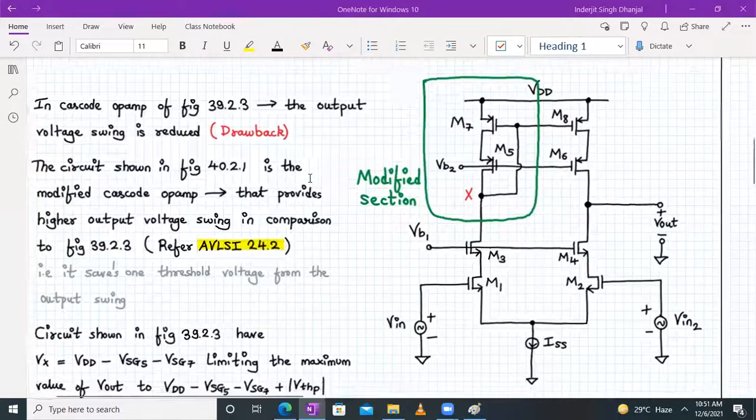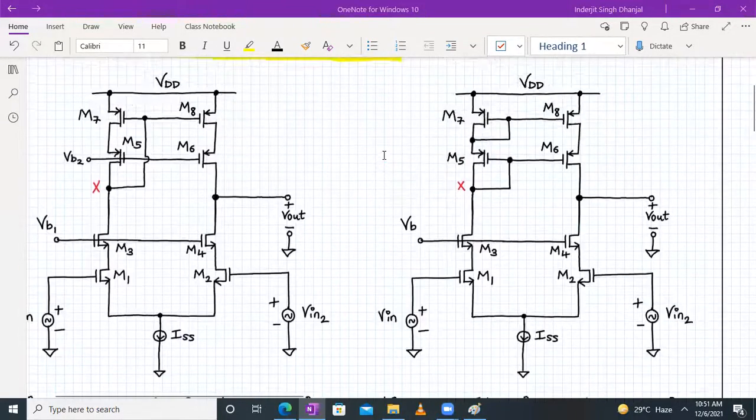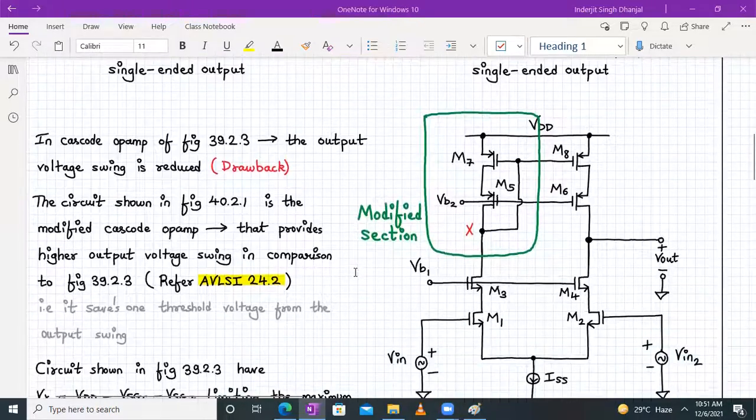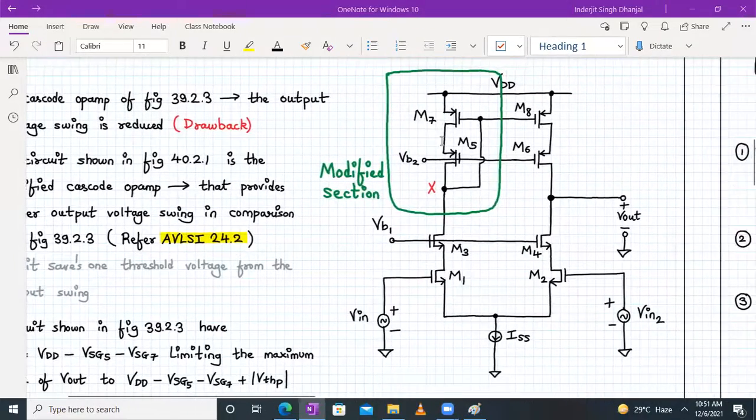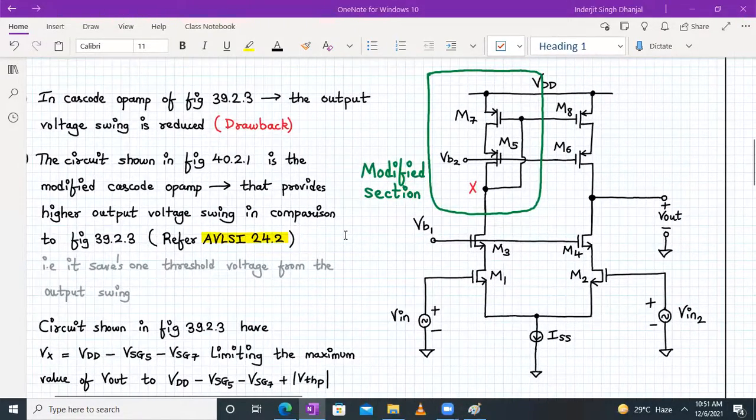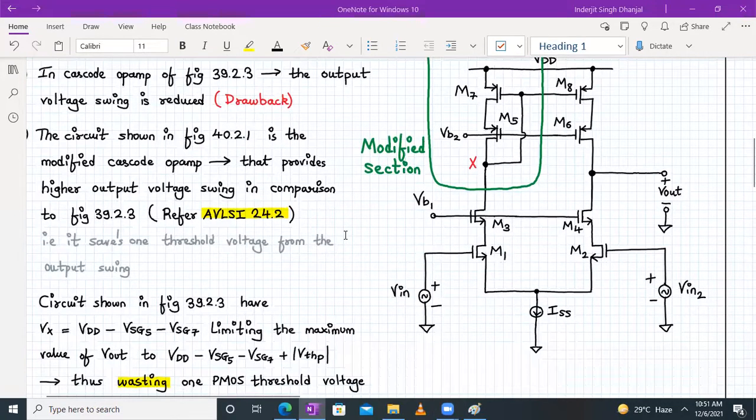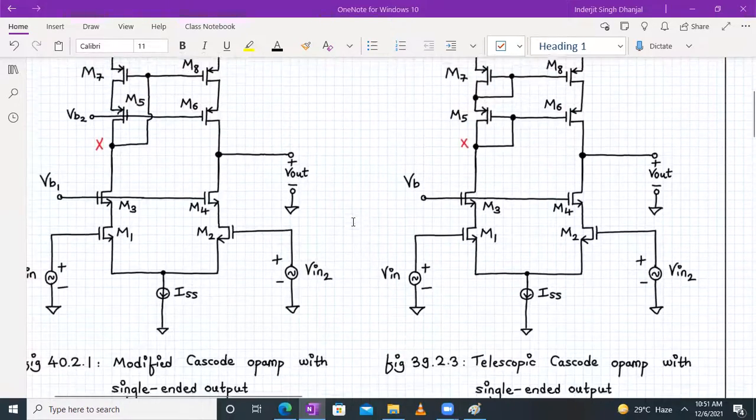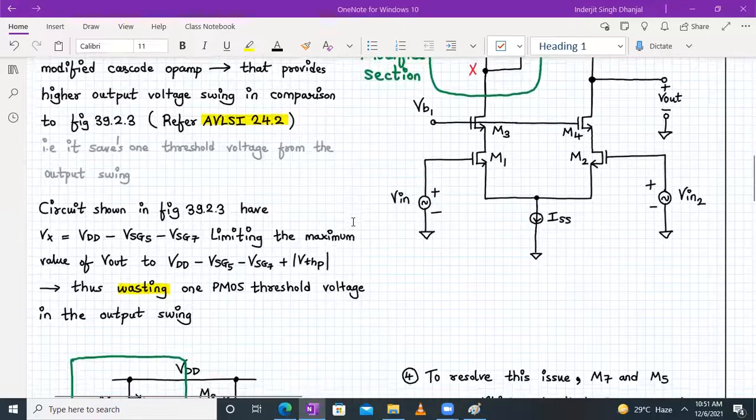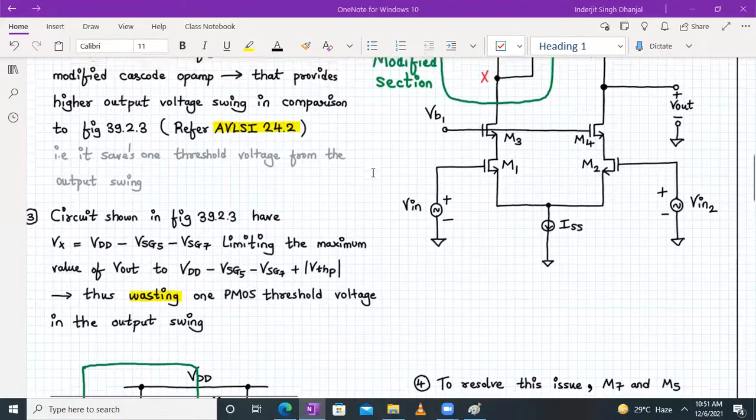In the cascode op-amp which we have seen earlier, the drawback was that the output voltage swing is reduced. The circuit shown in Figure 42.2.1, which is here, is the modified cascode op-amp that provides higher voltage swing in comparison to the earlier circuit. It will save one threshold voltage from the output swing.